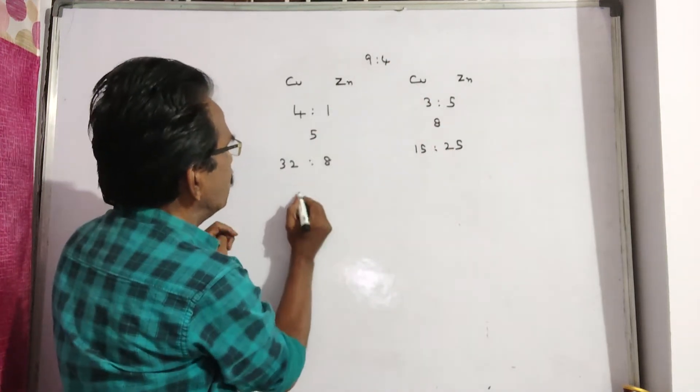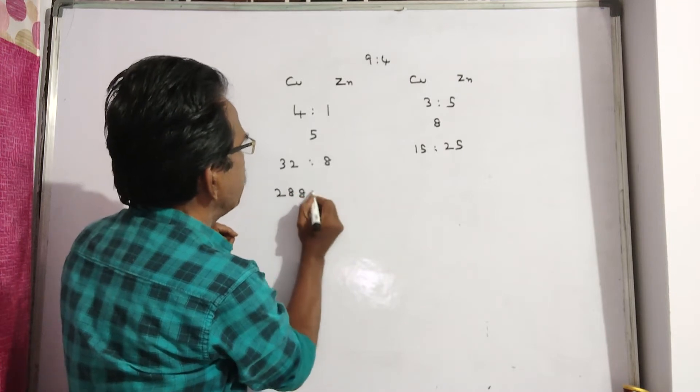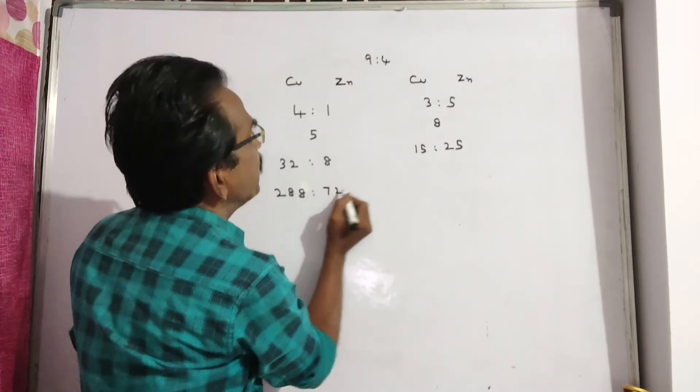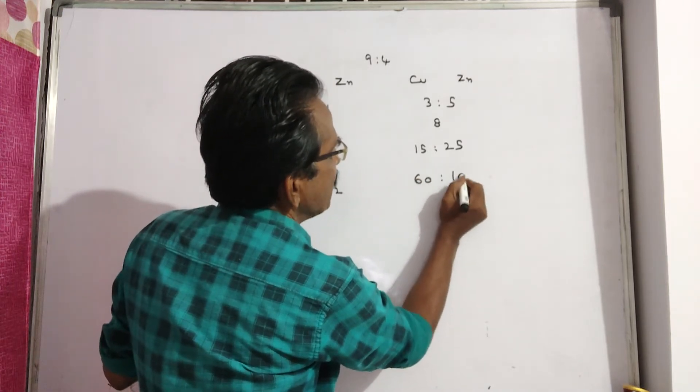9 times 32: 18, 27, 288. 9 times 8: 72. 4 times 15: 60. 4 times 25: 100.